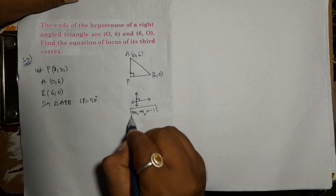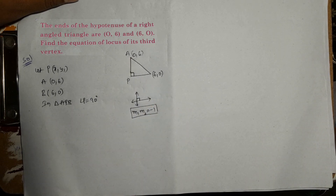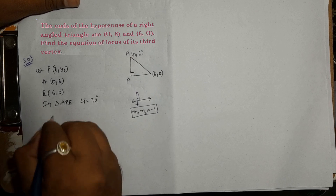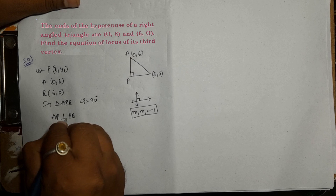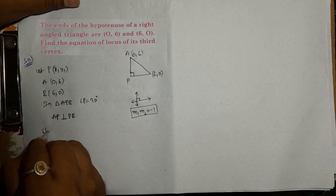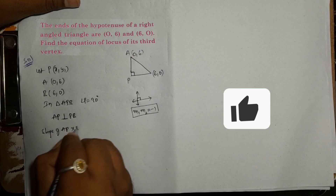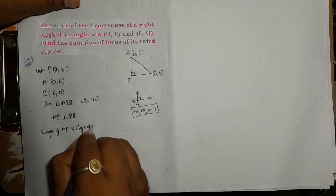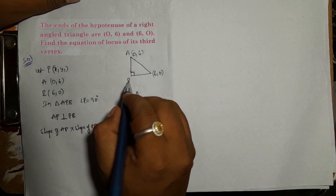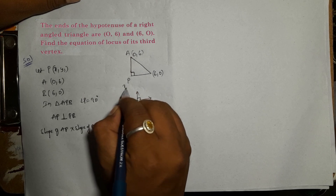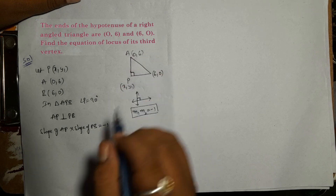Applying this rule to the triangle: AP and PB are perpendicular to each other. So the slope of AP multiplied by the slope of PB is equal to minus 1. The slope formula is (y2 - y1) / (x2 - x1).